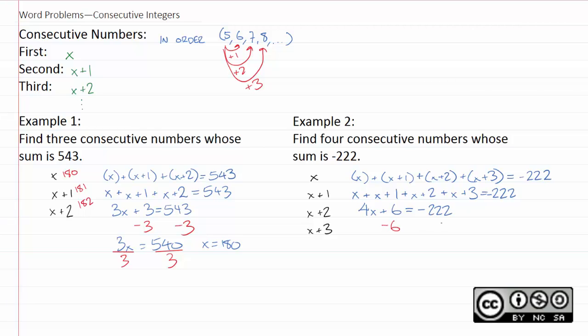And now I just solve. I'll subtract 6 from both sides. I get 4x equals negative 228. Remember, those are both negative. So their absolute values are going to add, which is why we get 222 plus 6 is 228. We divide by 4, and x comes out to negative 57.